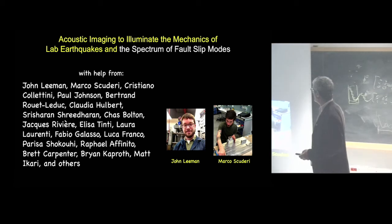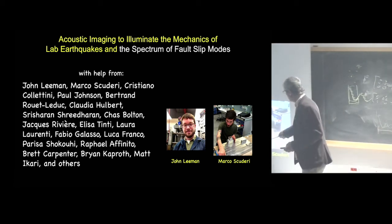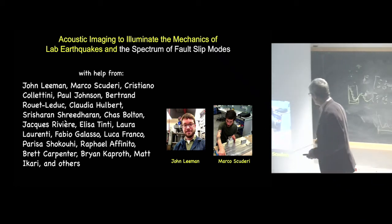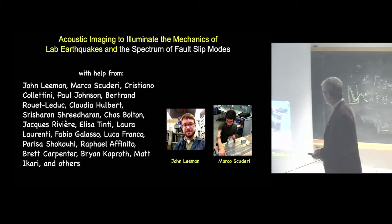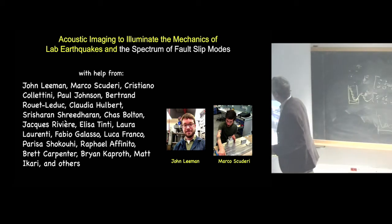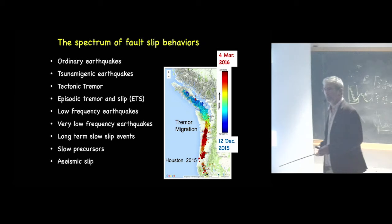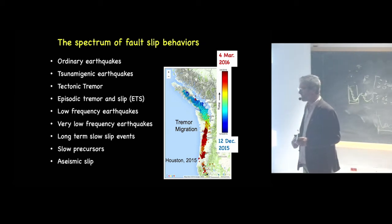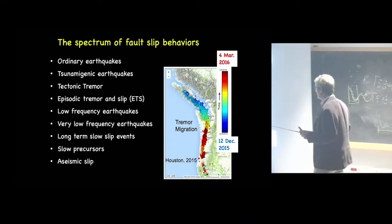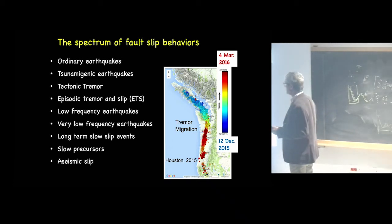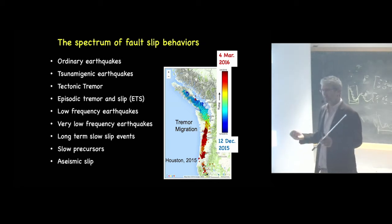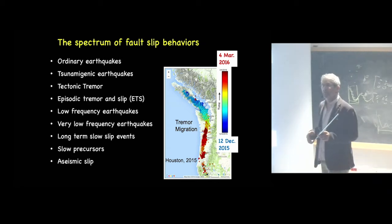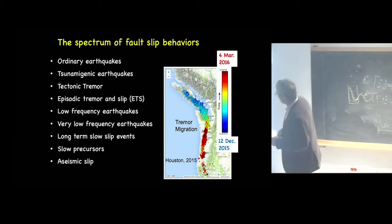We're trying to push to the point where we can use acoustic images to actually understand the structure of a laboratory fault zone, which represents some real challenges. The spectrum of fault slip in the laboratory started in particular with the PhD work of John Lehman and also Marco Scuderi. Marco Scuderi joined first as a postdoc and now as an assistant professor at the University of Rome. Maybe it's not widely understood that slow earthquakes really represent a form of fault slip that is connected in an interesting way to ordinary fast earthquakes. It was only about 20 years ago that we started to get an idea that there's a spectrum of behaviors.